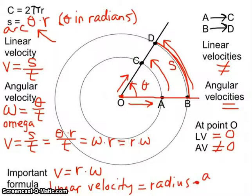Now, this does have to be done in radians. Let's look back at our example and see if this important formula makes sense. Well, if we're at point O, the radius would be zero. So, no matter what angular velocity I have, the linear velocity is going to be zero. That makes sense.